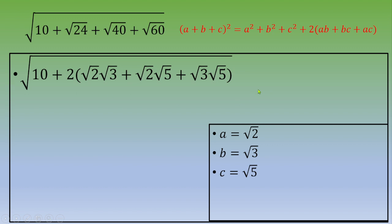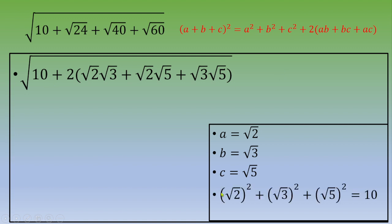The next step is to check whether A squared plus B squared plus C squared equals 10. We verify: square root of 2 squared is 2, plus square root of 3 squared is 3, plus square root of 5 squared is 5 — and indeed 2 plus 3 plus 5 equals 10. So the condition is satisfied.